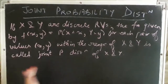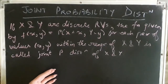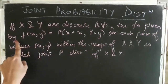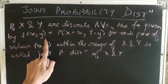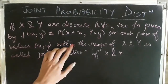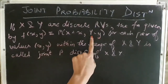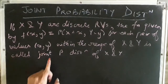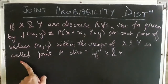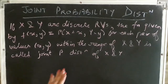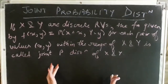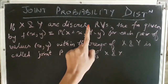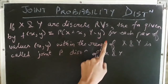Let us first look at how the joint probability distribution of X and Y is defined. If X and Y are discrete random variables, the function given by f, which equals the probability of X being equal to x and Y being equal to y, for each pair of values x, y within the range of X and Y, is called the joint probability distribution of X and Y. This is basically the probability that random variable X takes on the particular value small x and random variable Y takes on the particular value small y.